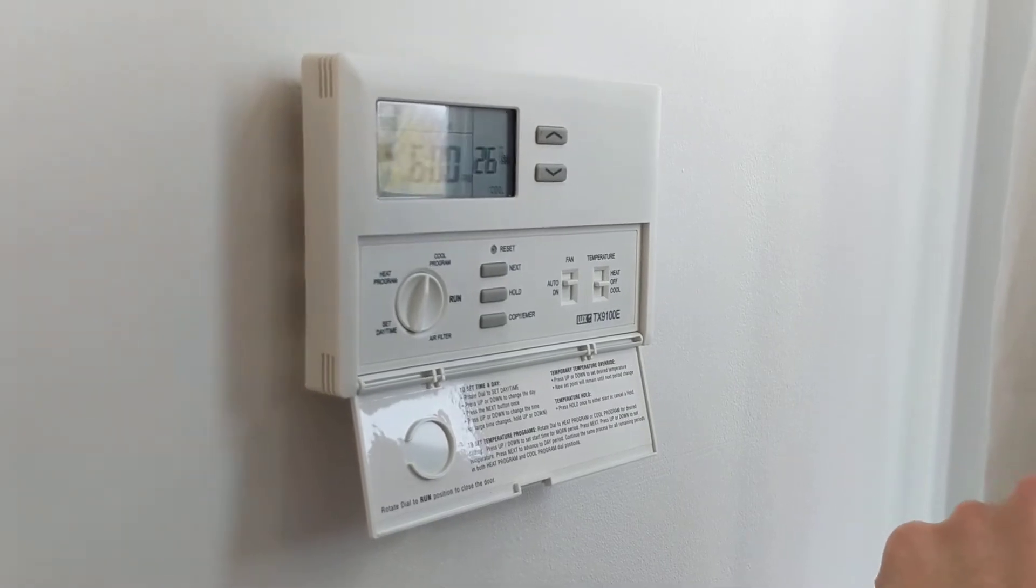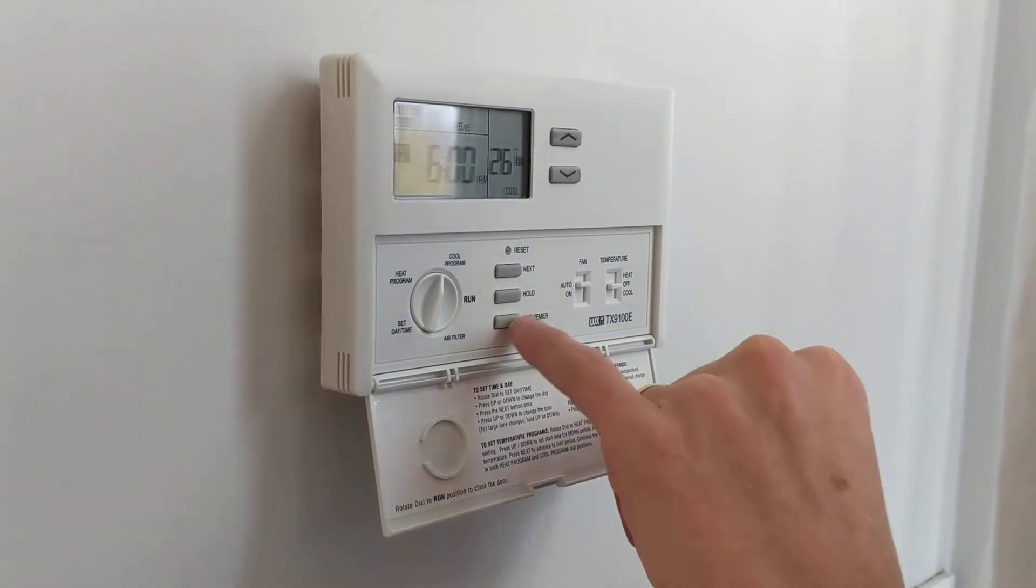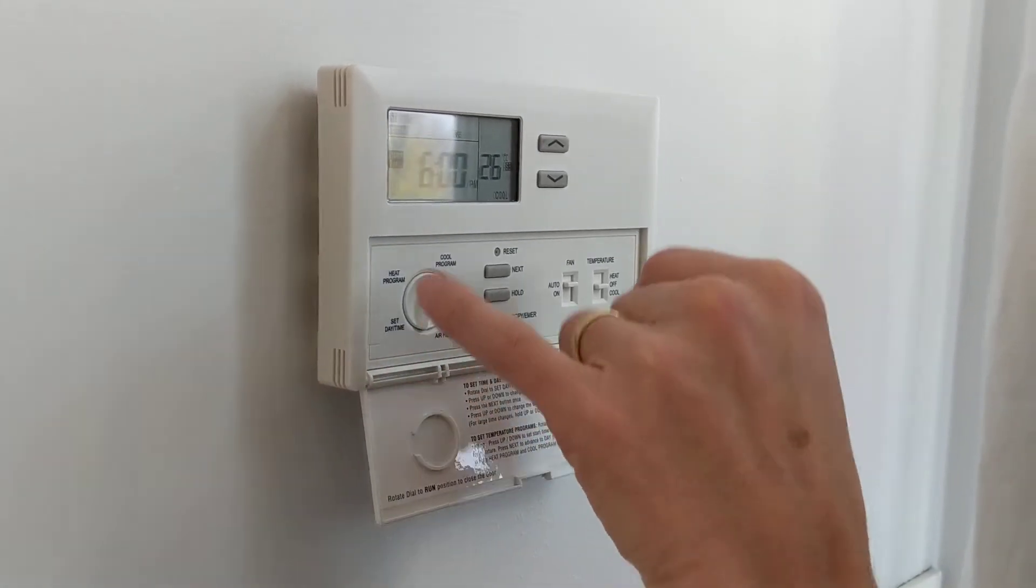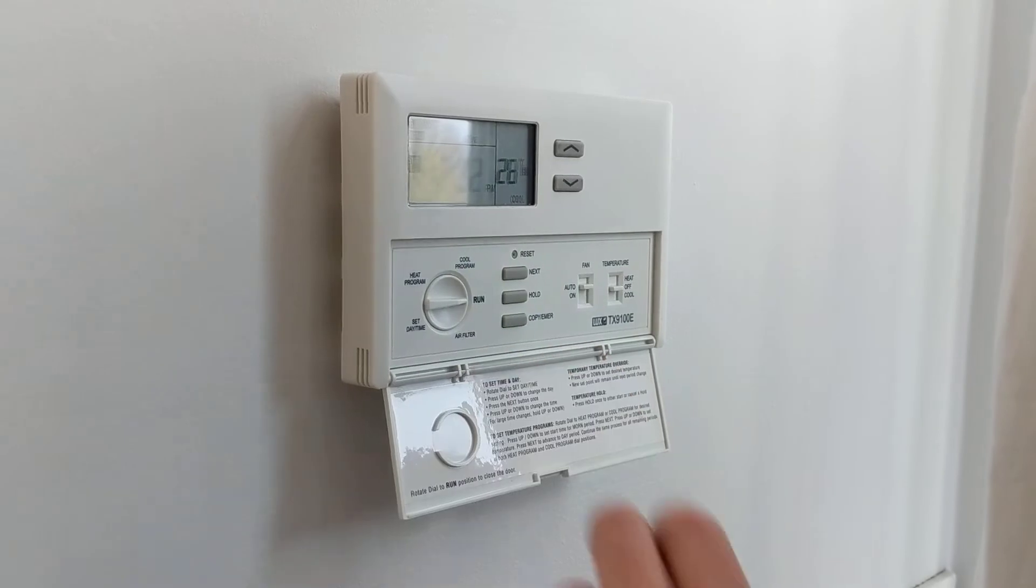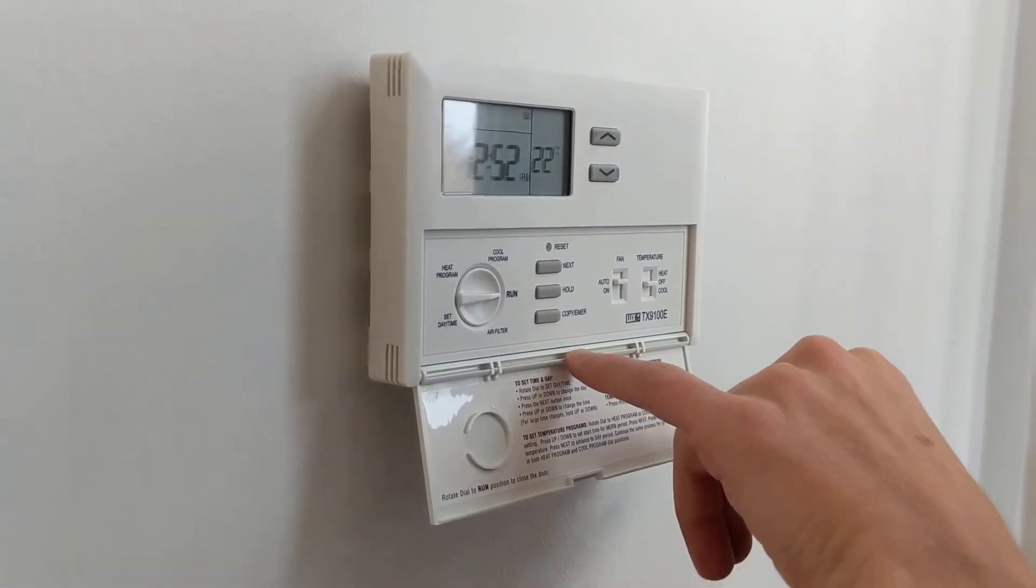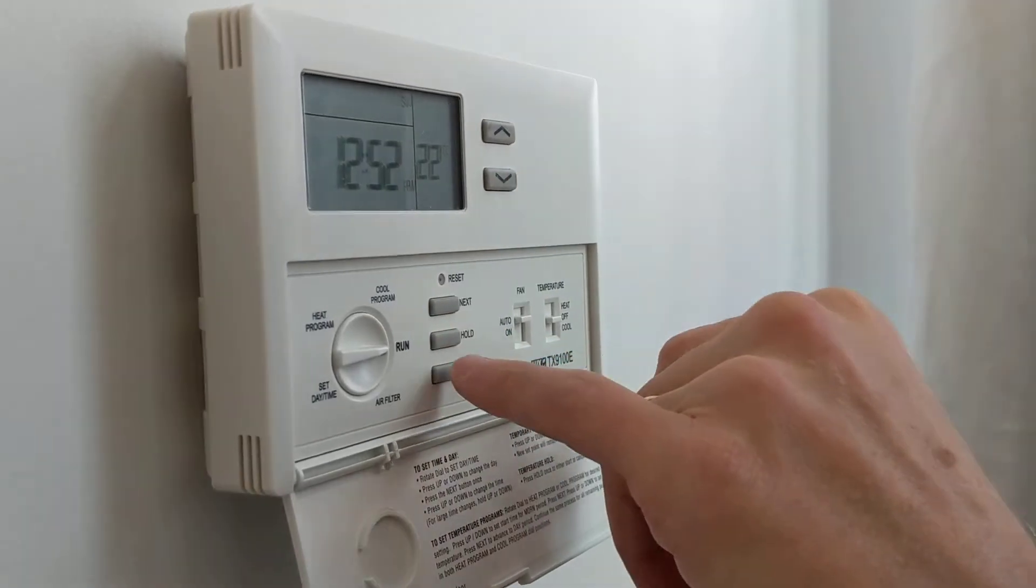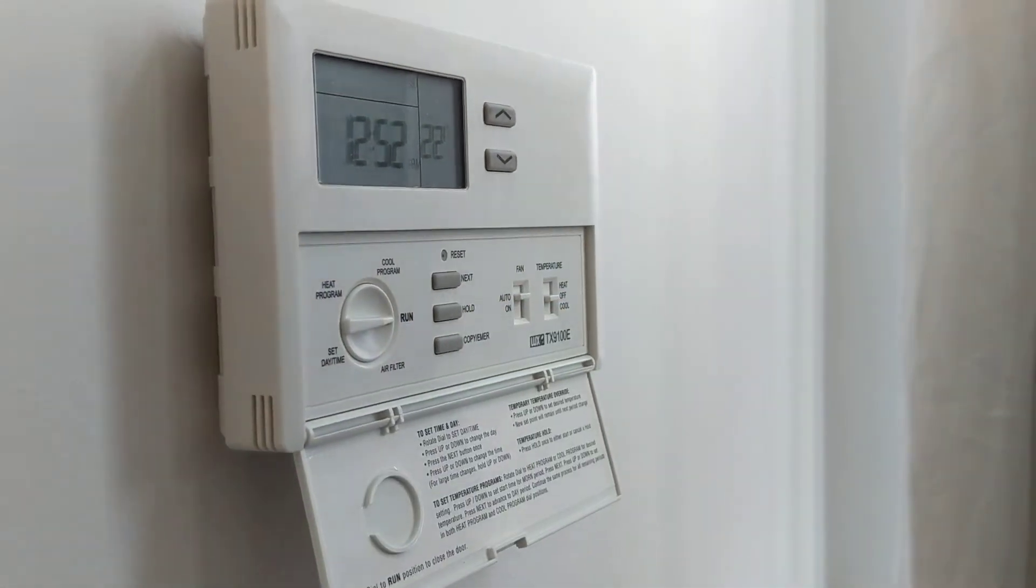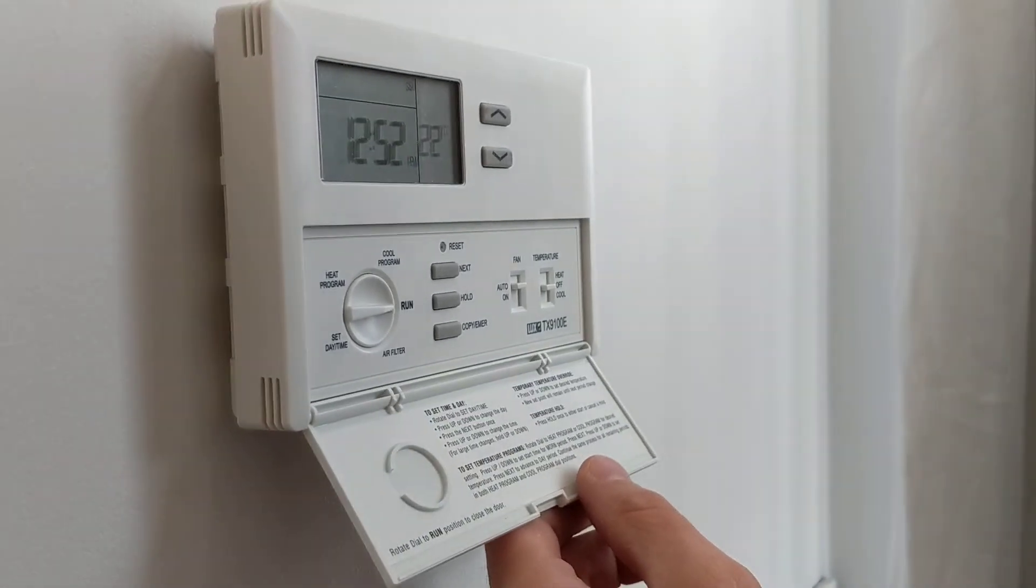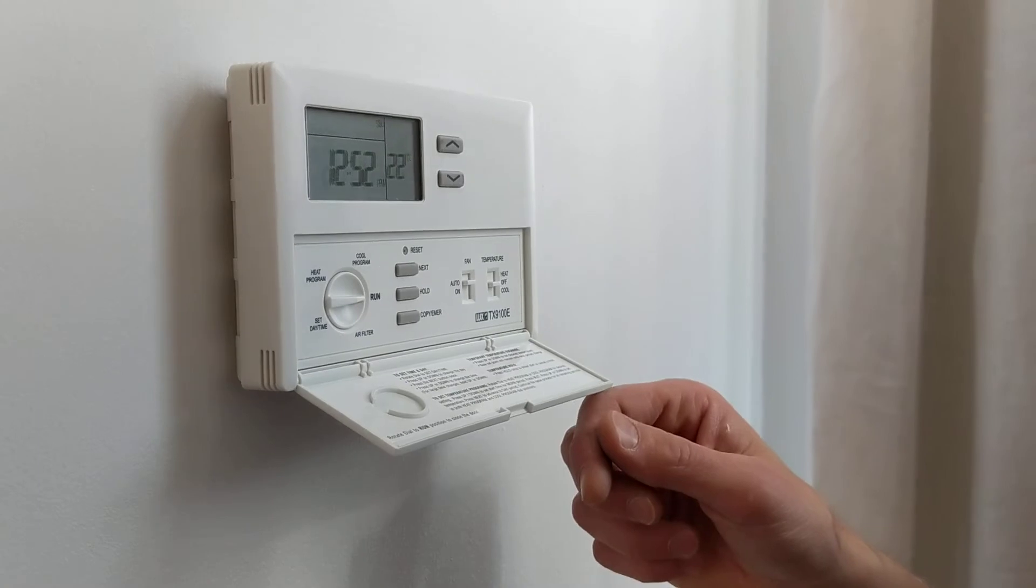So you can change all seven days if you want and refer to the manual for how you use the copy to copy one day to other days. And that's it. Then you set it to run. There's also a hold button. So you can use that like a vacation. You could set it down to a certain temperature or let it go up to a certain temperature. Press hold and it'll stay that way until you come back. That's pretty much it. Great. You're ready to go.